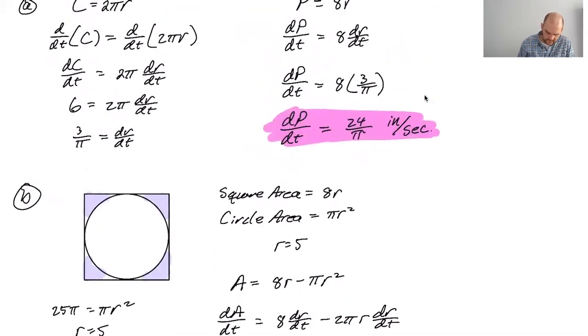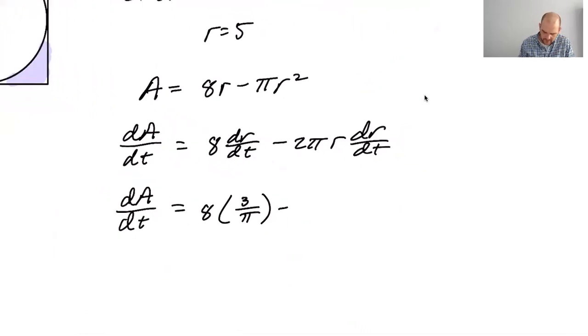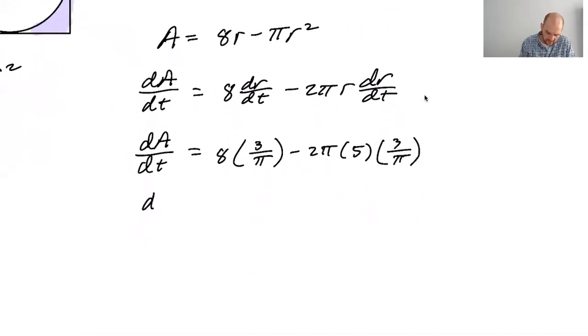So the area overall is going to be the square minus the circle. So dA/dt is going to be 8 dr/dt minus 2πR dr/dt. We know dr/dt is 3 over π. I mean, I guess it makes sense that it's the rate of change of the square minus the rate of change of the circle. I'm basically trying to excuse myself for doing this. I feel like there was supposed to be a more clever way that I did not see ahead of time.